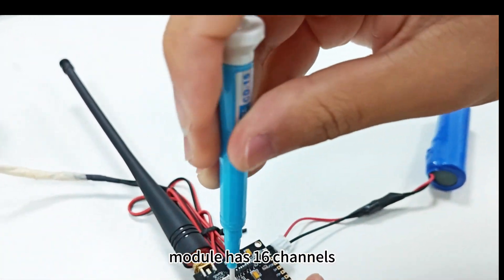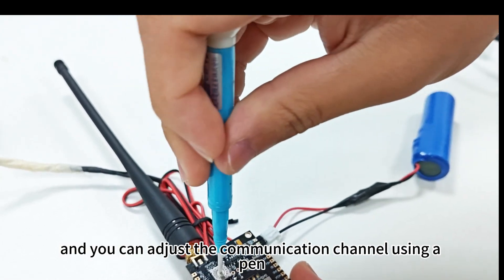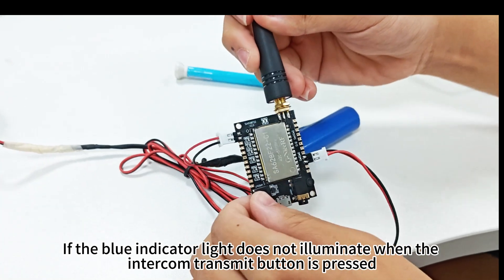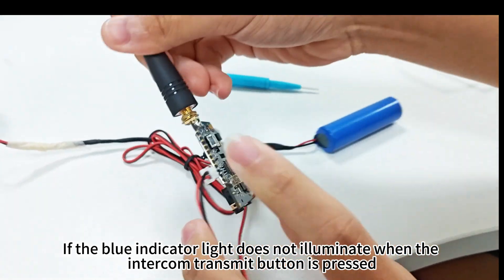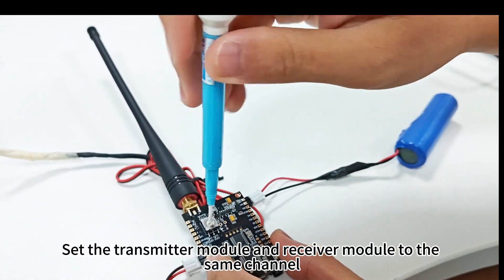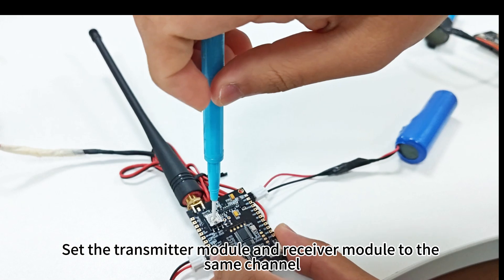The module has 16 channels, and you can adjust the communication channel using a pen. If the blue indicator light does not illuminate when the intercom transmit button is pressed, it indicates a communication issue. Set the transmitter module and receiver module to the same channel.